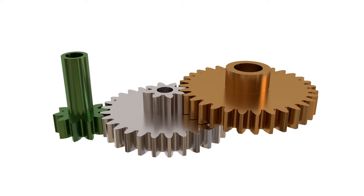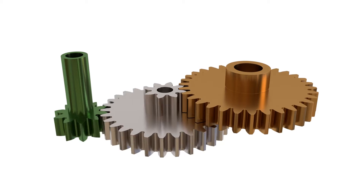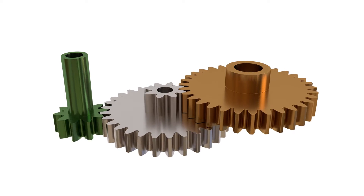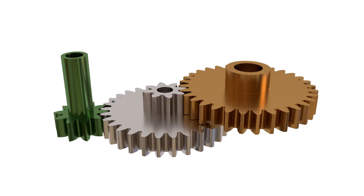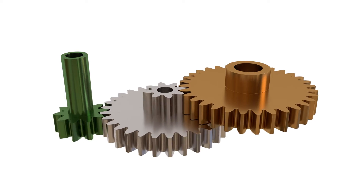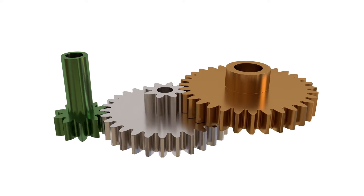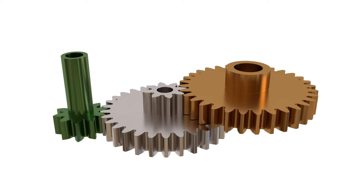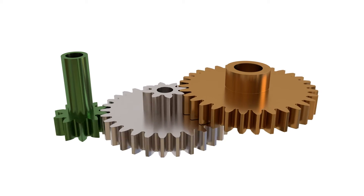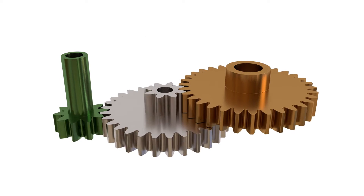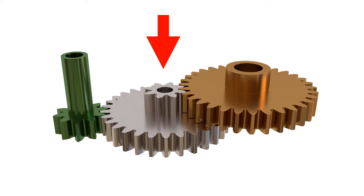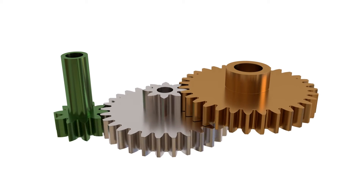In a gear train, multiple gears are engaged to provide a particular overall gear ratio. If there are multiple stages in a gear train, the overall gear ratio is the multiple of the gear ratios of each stage. To achieve a higher overall gear ratio, intermediary gears in a train are often made up of rigidly connected coaxial gears with a different number of teeth. They are called compound gears.